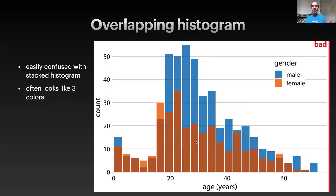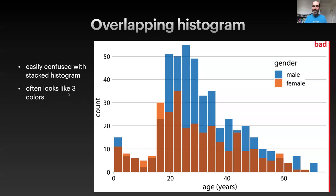Overlapping histograms are like stacked histograms, but now instead of stacking densities on top of each other, we're going to literally plot them on top of each other, but set the transparency on the bars so that we can see the other bars underneath. This has the somewhat obvious disadvantage that if stacked histograms are confused with overlapping histograms, overlapping histograms can be confused with stacked histograms.